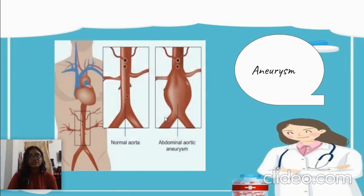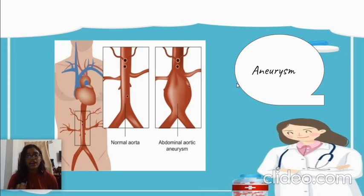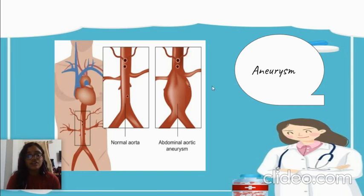The final complicated lesion is aneurysm. Atherosclerosis can cause secondary changes in the media or adventitia, such as thinning of the media and fibrosis of the adventitia. This can cause abnormal dilation of the vessels, resulting in abdominal aortic aneurysm.